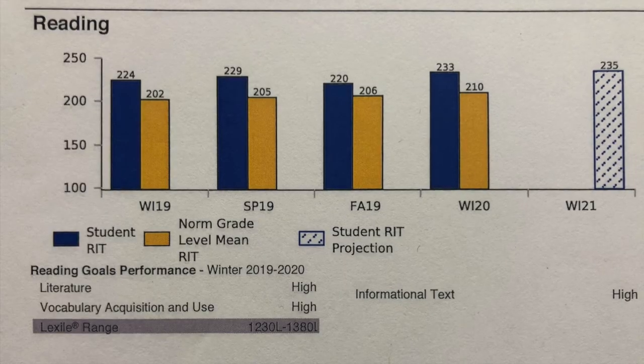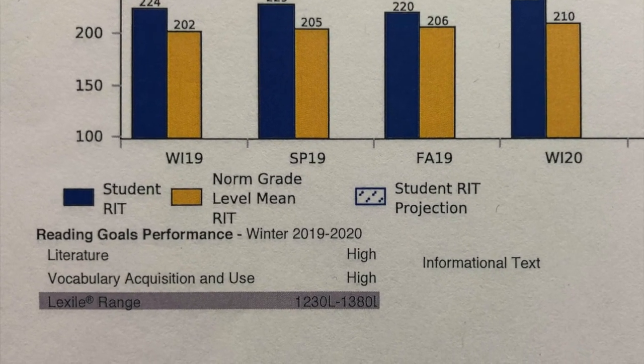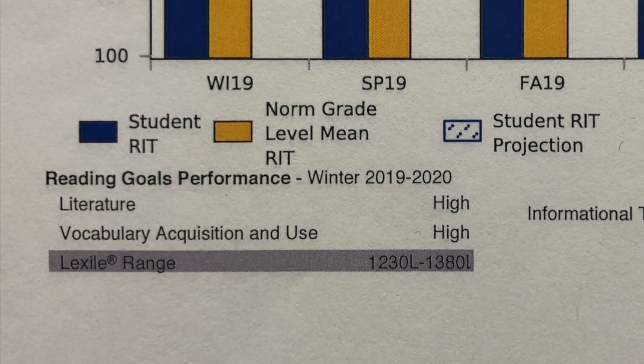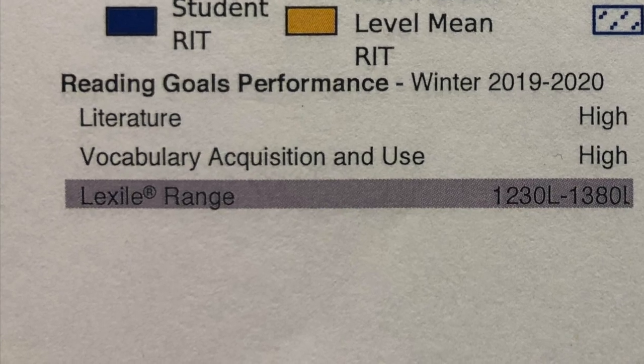The same thing for reading — it breaks it down into three different domains: literature, which would be your fiction text; informational text, which would be your nonfiction text; and vocabulary usage. It will give you ranges such as high, low, or average. You want your child to be in the average range, so anything that says low is what you need to focus on, or at least know that that's what your child is struggling with according to the MAPS.